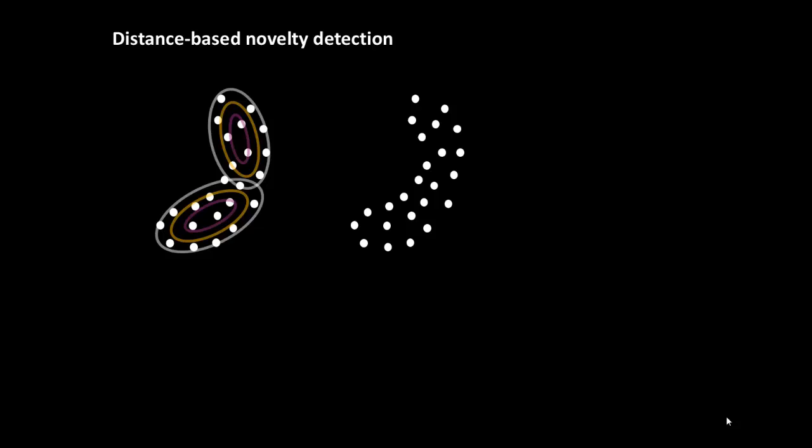Distance-based approaches include the concepts of nearest neighbor and clustering analysis. The assumption here is that normal data are tightly clustered, while novel data occur far from their nearest neighbors.